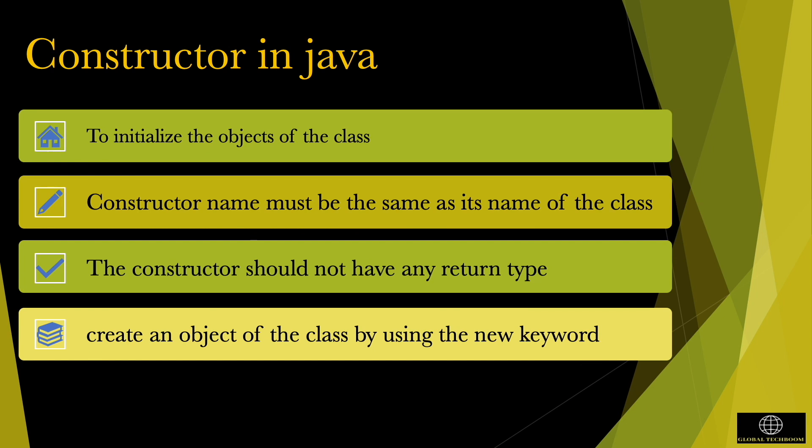The purpose of constructor is to initialize the objects of the class. It is invoked when an instance of a class is created using the new operator. Constructor name must be the same as its name of the class. Whenever you create an object or instance of a class, the constructor will be automatically called by the JVM.